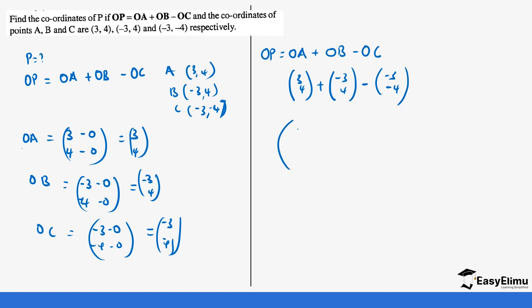So this is the same as 3 plus -3 minus minus 3. 4 plus 4 minus minus 4. You can decide to do 2 at a time. So 3 plus -3 is 0, then minus minus 3 is plus 3, so you end up with 3.